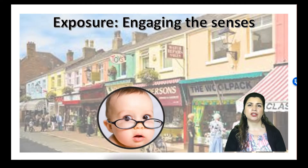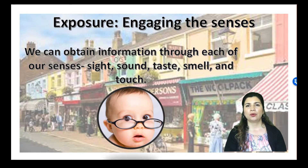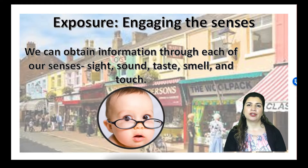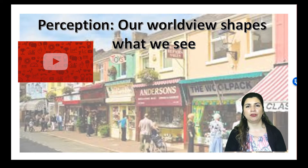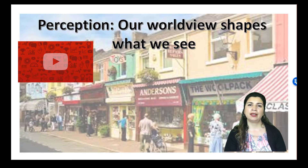Seeing a stimulus is just one way we encounter information in our environment or world. We can obtain information through each of our senses: our vision, sound, taste, smell, and touch. The information a consumer perceives in a stimulus such as a YouTube ad is composed of raw stimuli, including light waves, sound waves, colors, shapes and movement. The information processing mechanism takes in this raw input and derives meaning from it.